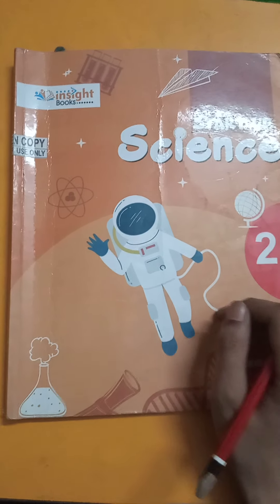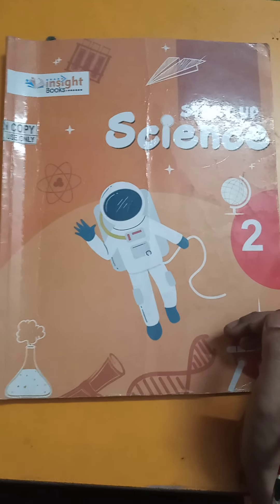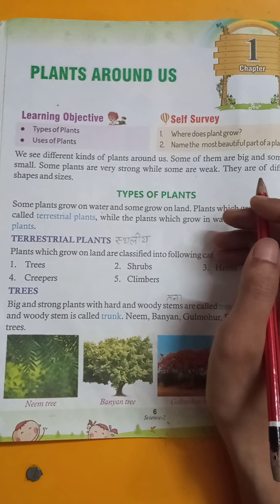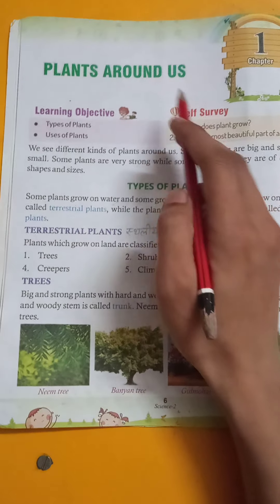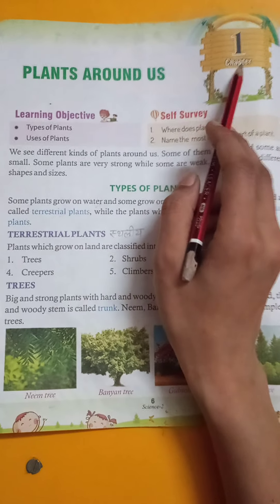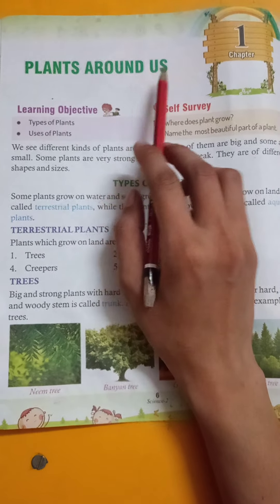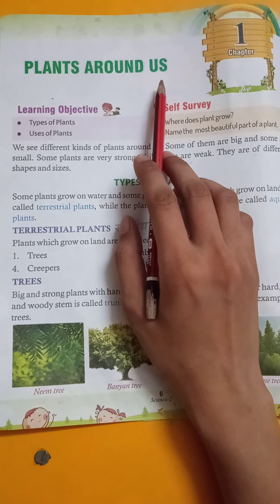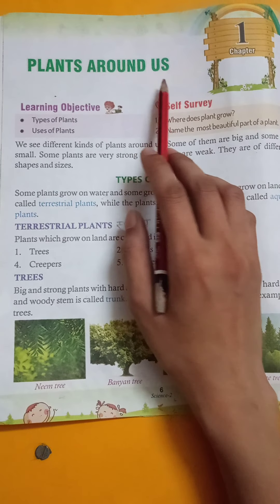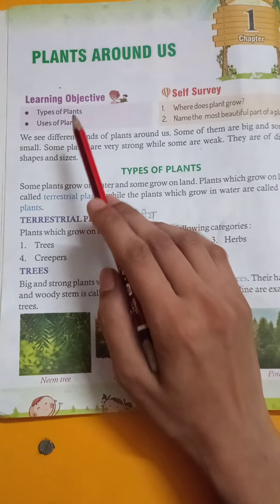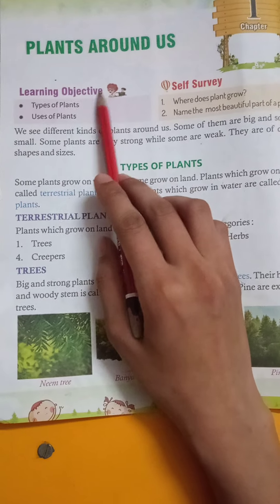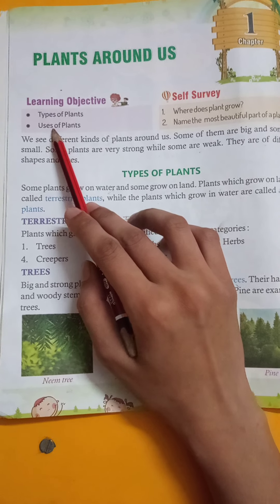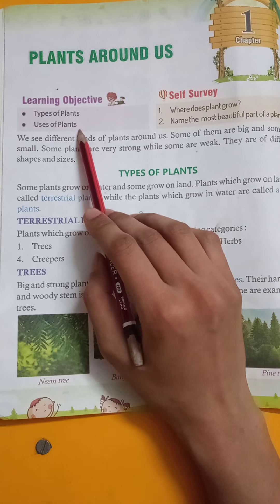Good morning students, today we are going to study subject science. Chapter 1: Plants Around Us. Learning objectives: today we will study types of plants and uses of plants.